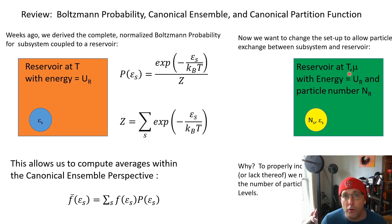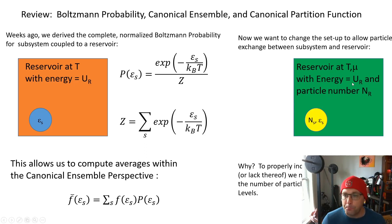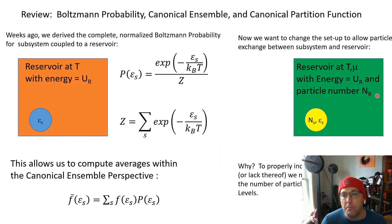The temperature of the reservoir determines its propensity for exchanging energy with a subsystem, and the chemical potential determines a reservoir's propensity for exchanging particles. So now we need to characterize our reservoir by how much energy it has and how many particles it has — and the same goes for the subsystem: both particles and energy.